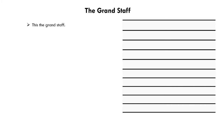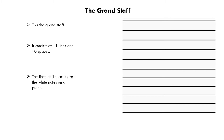This is the grand staff. It consists of eleven lines and ten spaces which notes are placed upon. The lines and spaces are the white notes on a piano. This means there will be no sharps and flats as they use the black keys, unless it's indicated, but we'll get more onto that in a separate video.